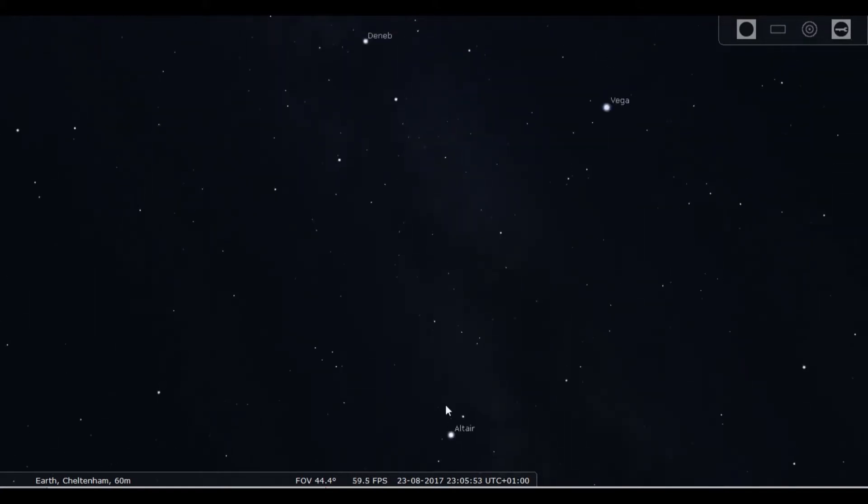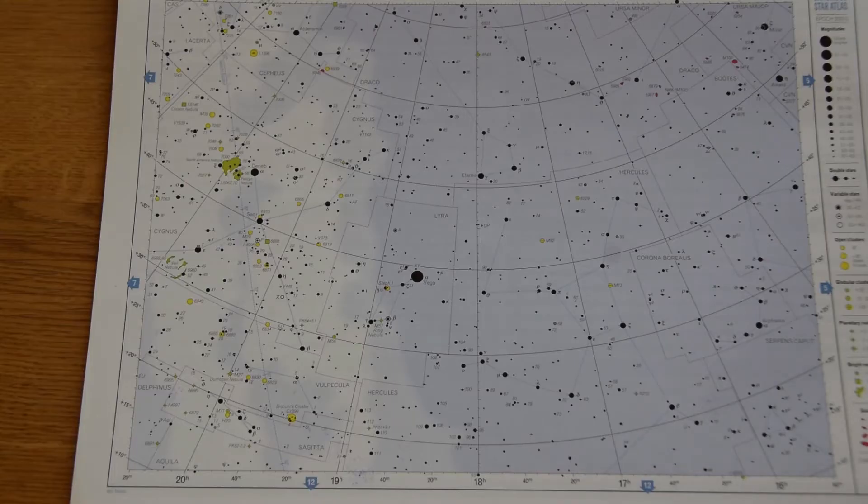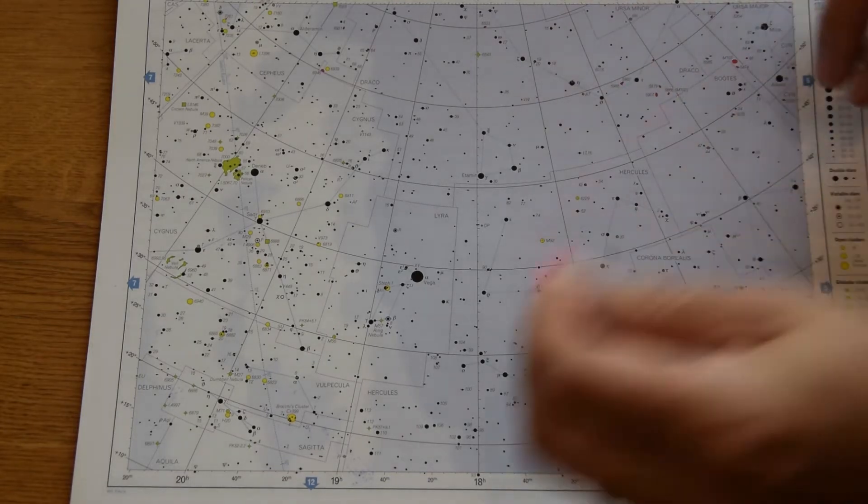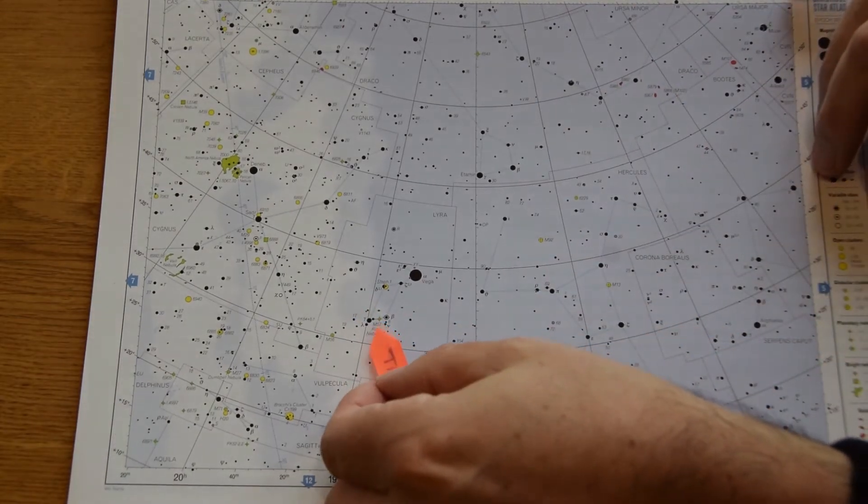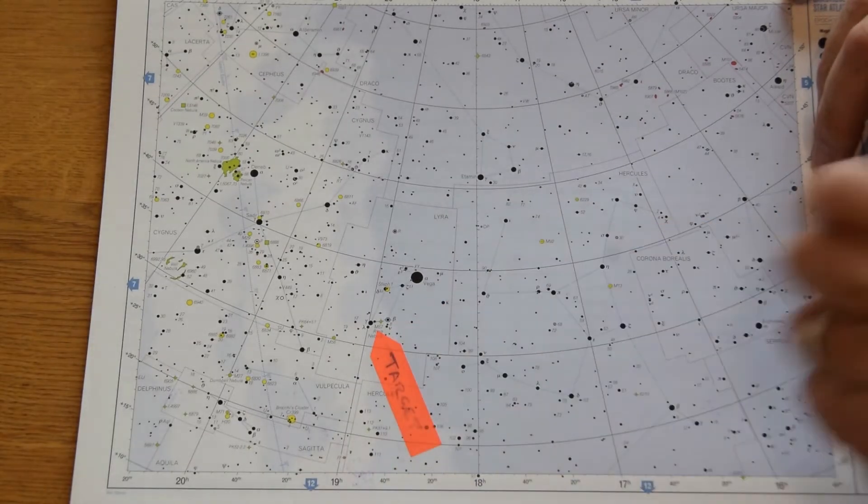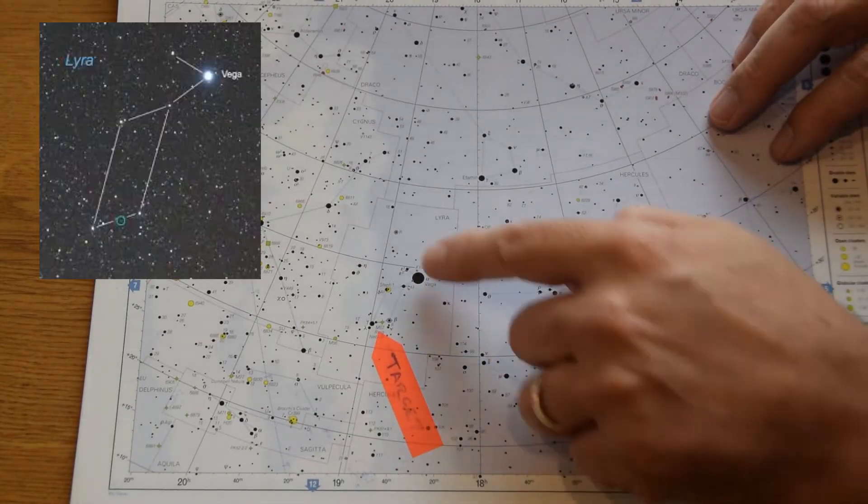Okay so that's the summer triangle, those three bright stars, and we're going to use those as the reference point for kicking off for our star hopping. So the first target on our list is M57, that's the Ring Nebula, and it's in the relatively small constellation of Lyra the Harp.